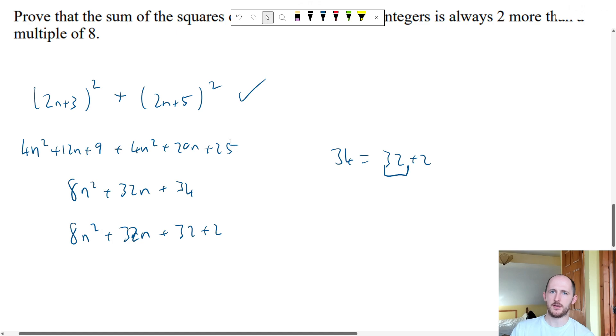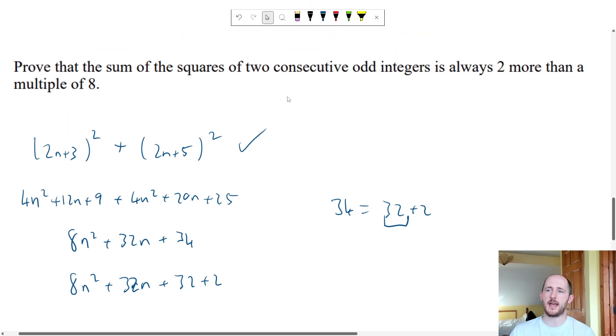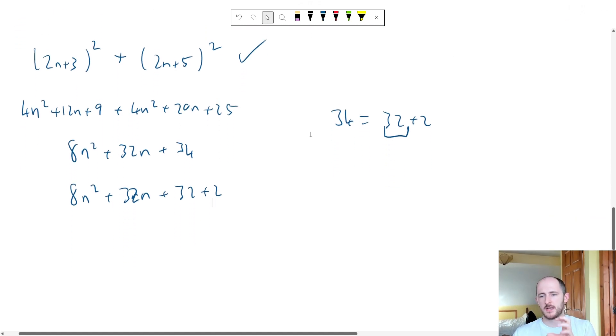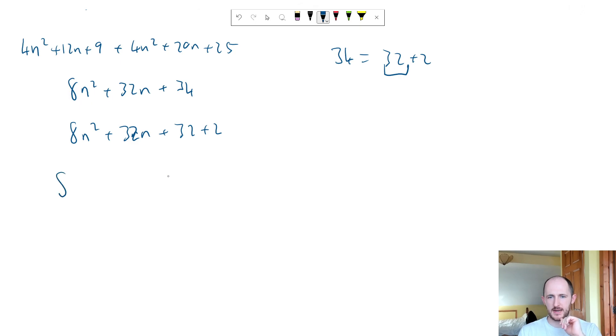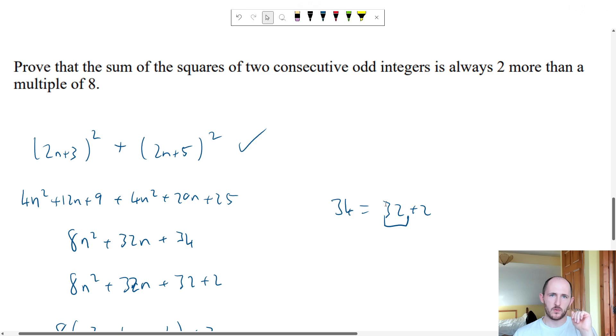How do I know that you can do that? Well to be honest I wouldn't have known to do that unless it told me it's always 2 more than. So I'm trying to split up the 34 into 2 and another number it must be 32. Then if I factorise this we get 8 times n squared plus 4n plus 4 plus 2. So this is always of course a multiple of 8 and then this means it's 2 more. There's 2 more than a multiple of 8 always.